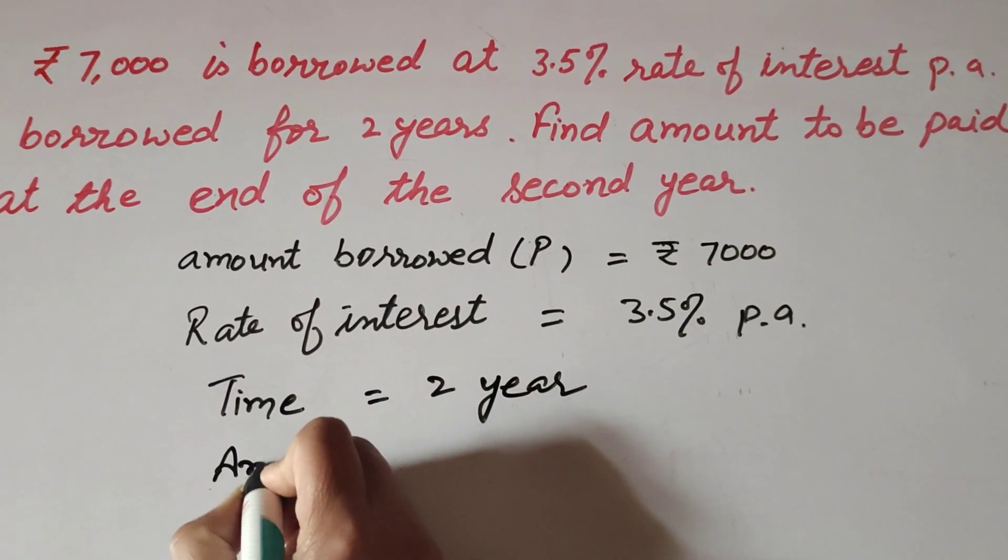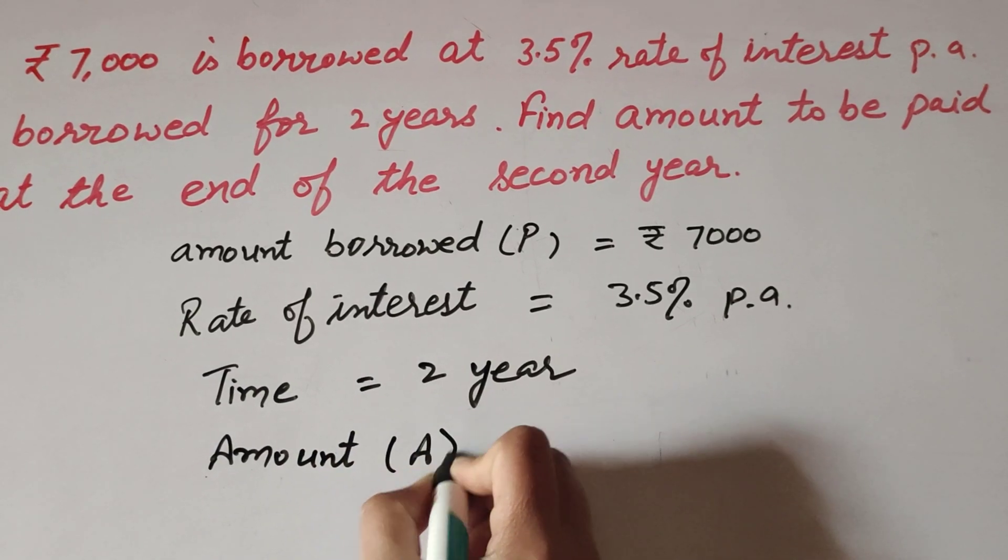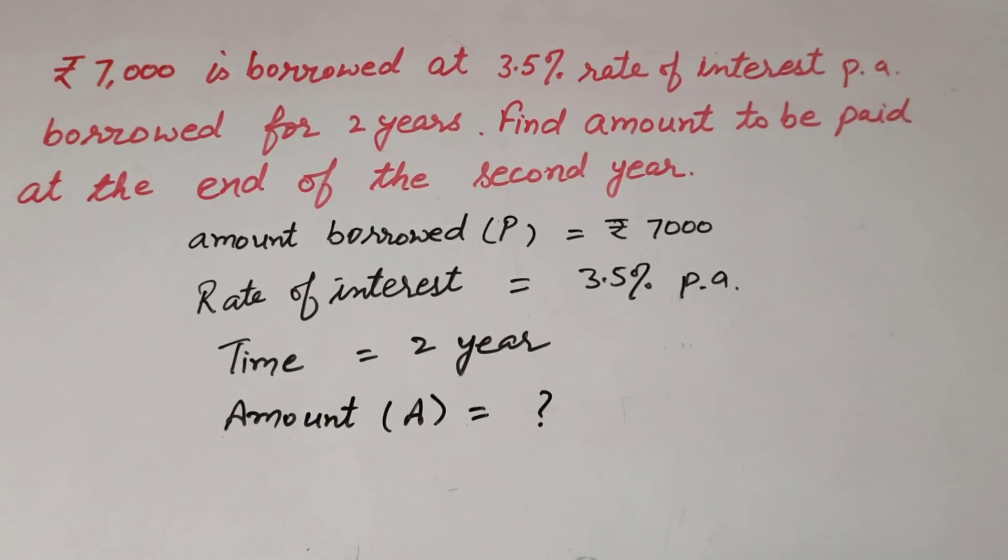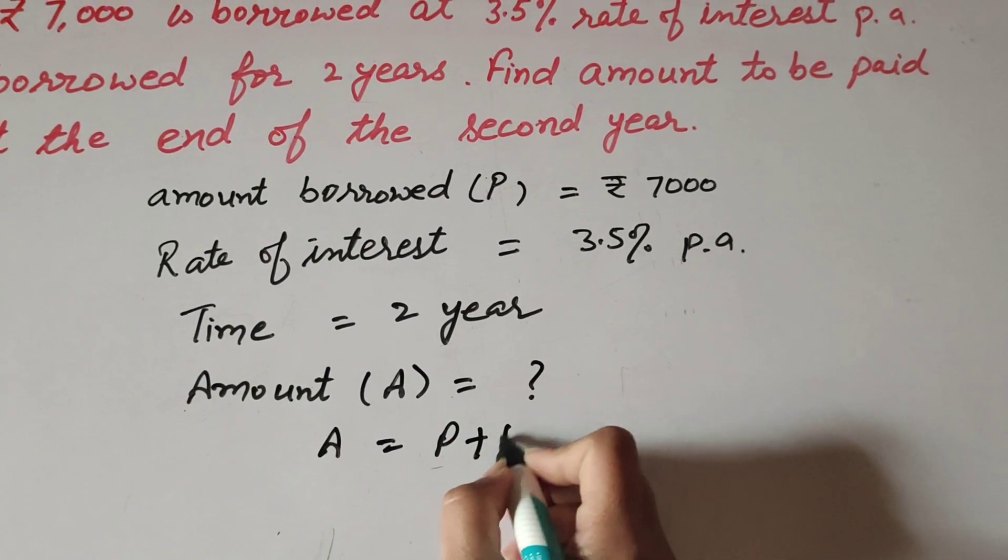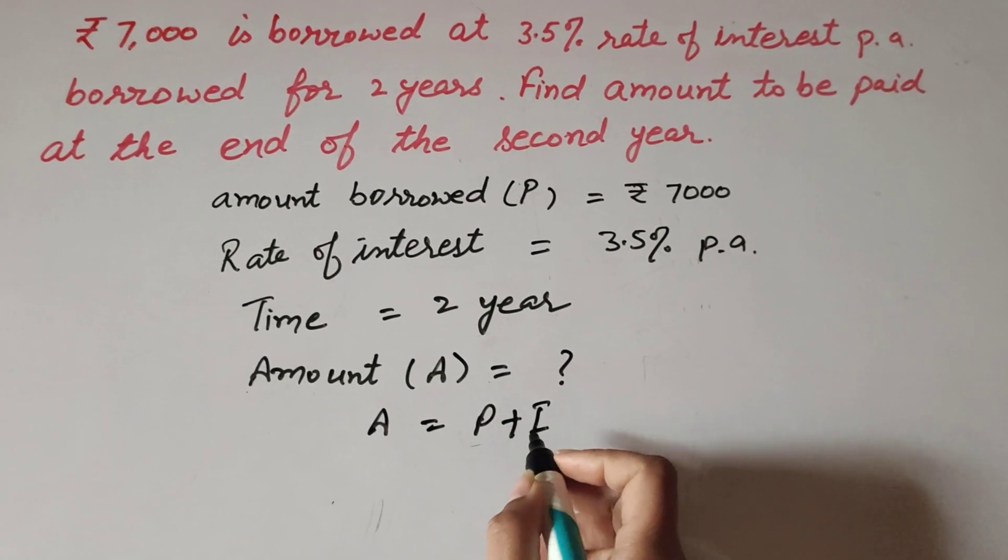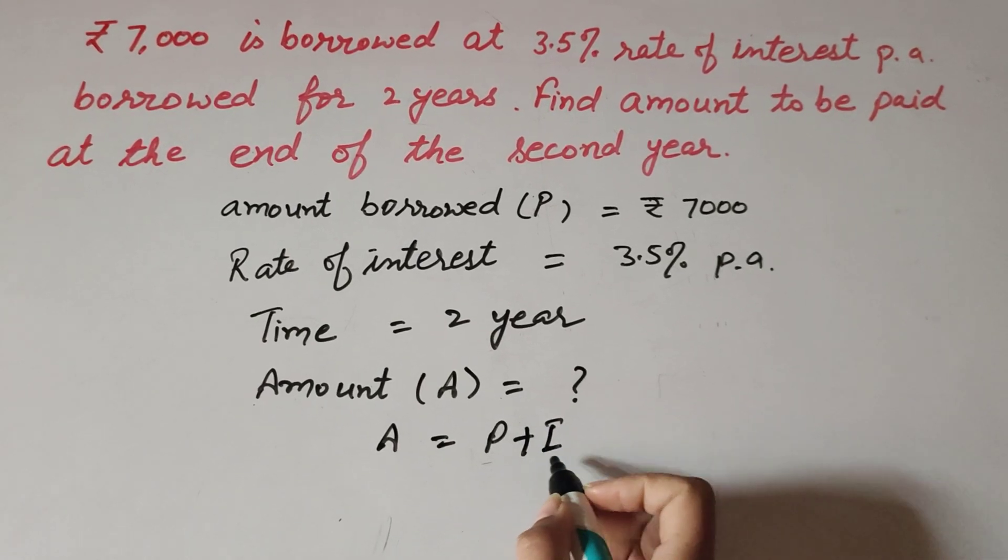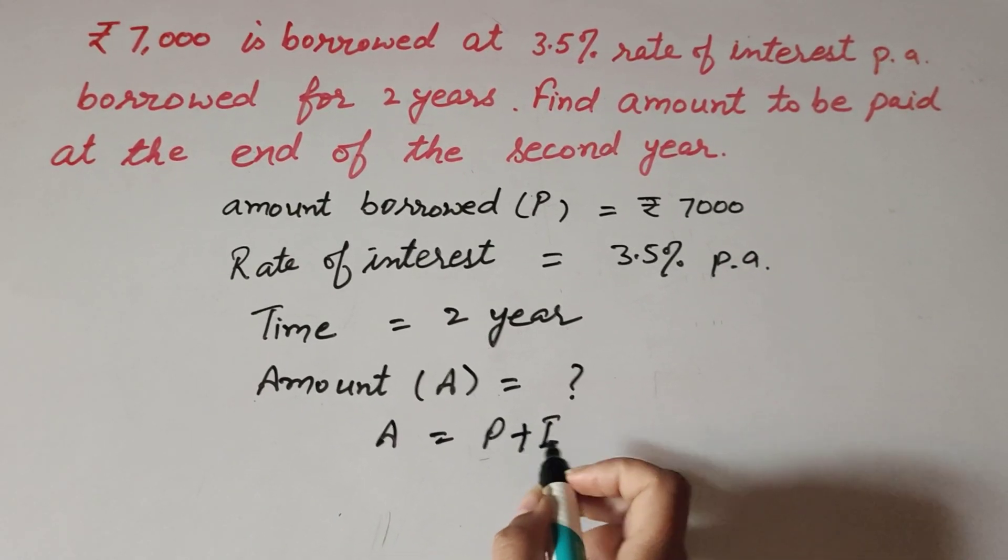We need to find Amount (A). We know Amount = Principal + Interest. In this question, principal is given but we don't have interest, so first we find the interest.